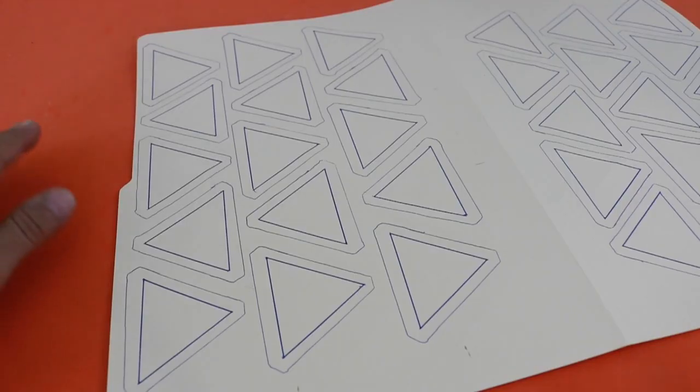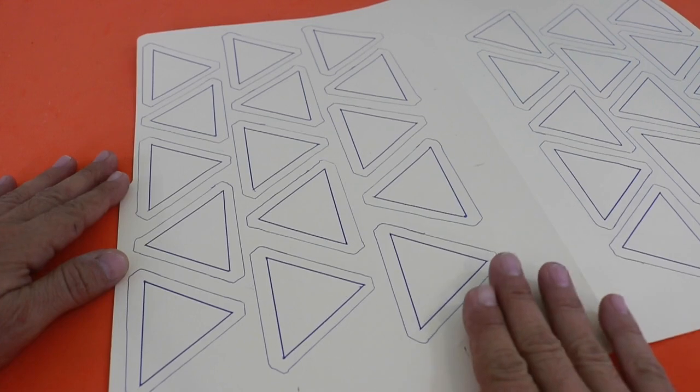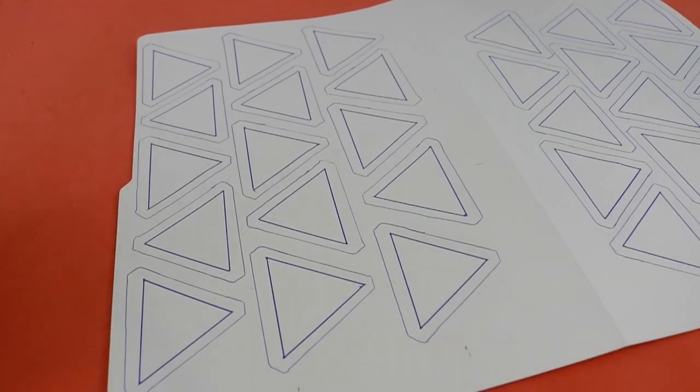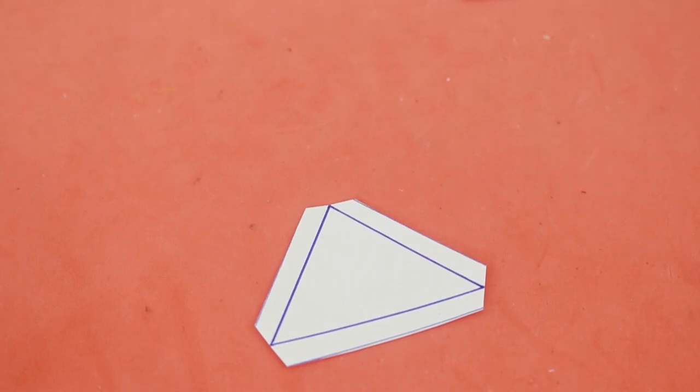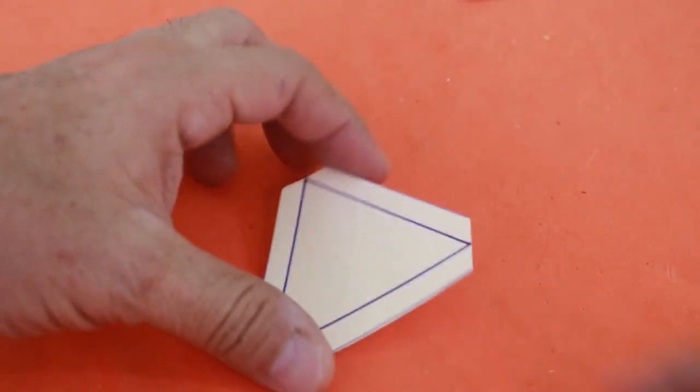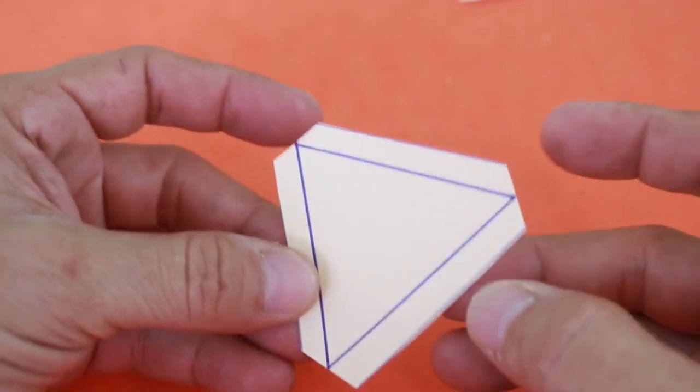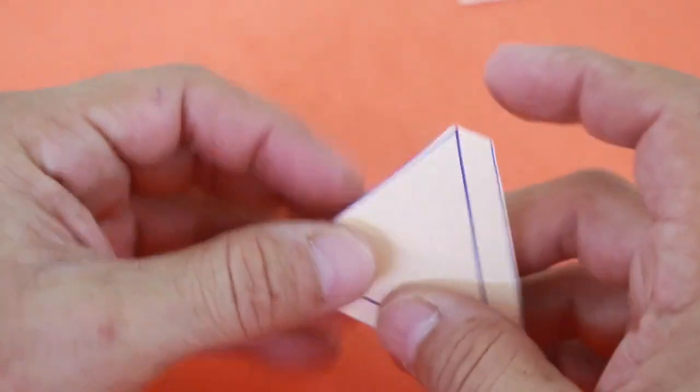Once you have all your triangles on the cardboard use a cutter or scissors to cut everyone. After you cut all your triangles in this way you just bend the flaps.